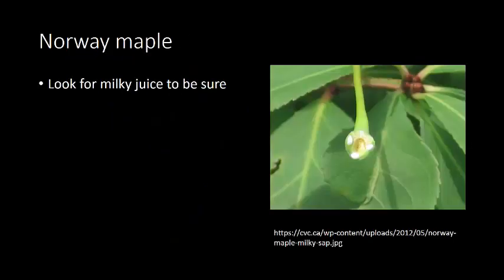Trees like this that have opposite leaves with palmate venation are often maple trees. And there are actually a lot of different kinds of maple trees in our area and several different ones along the trail.